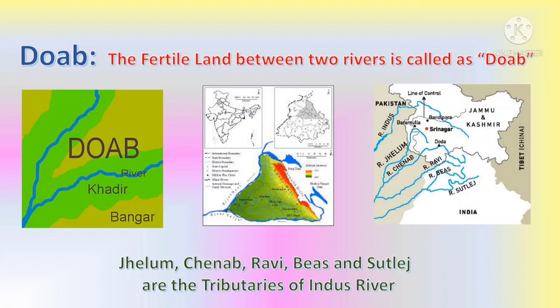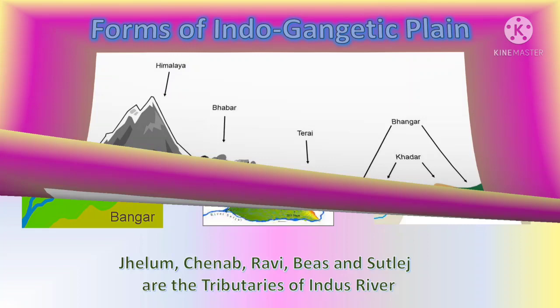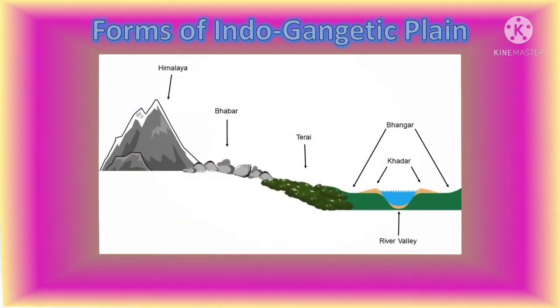Jhelum, Chenab, Ravi, Beas, and Sutlej are the tributaries of the Indus river.